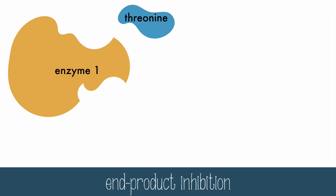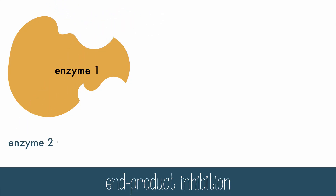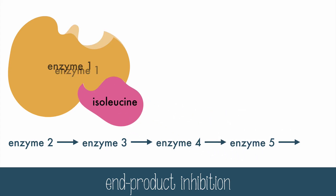One example pathway starts with threonine as the initial substrate, which goes through many transformations by multiple enzymes and eventually forms isoleucine as the end product. Isoleucine is a non-competitive inhibitor for the first enzyme in the pathway, called threonine deaminase. When the concentration of isoleucine increases, the number of inhibited enzymes also increases until the pathway is shut down.